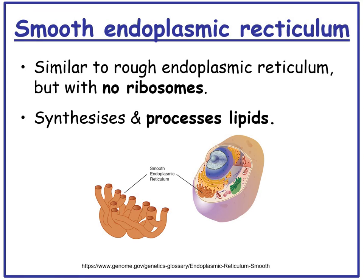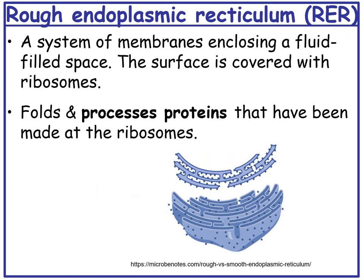The smooth endoplasmic reticulum is similar to the rough ER but has no ribosomes, and it synthesises and processes lipids. The rough endoplasmic reticulum (RER) is a system of membranes enclosing a fluid-filled space, with its surface covered with ribosomes. It processes proteins that have been made at the ribosomes.